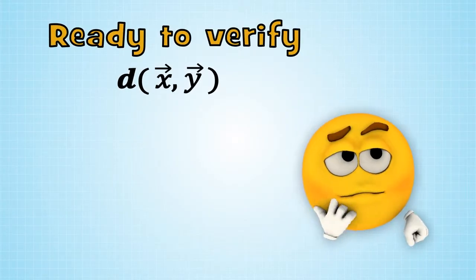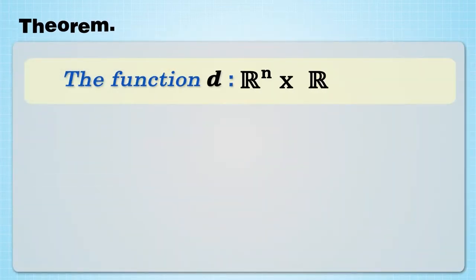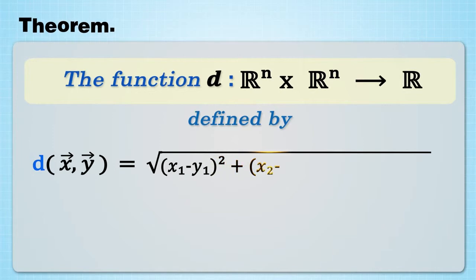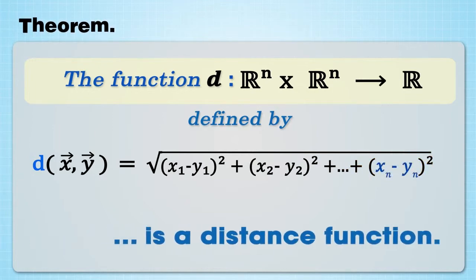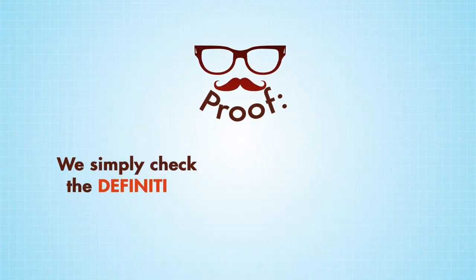We are now ready to verify that d is a distance function. Theorem: The function d from R^n cross R^n to R, defined by d(x,y) equal the square root of (x1 minus y1) squared plus (x2 minus y2) squared all the way up to (xn minus yn) squared, is a distance function. Proof: We simply check the definition.